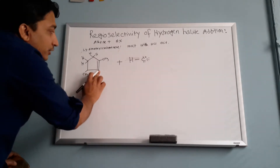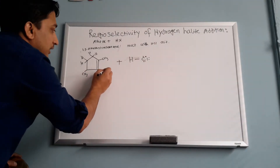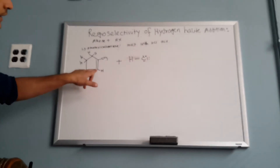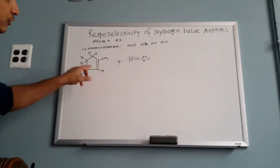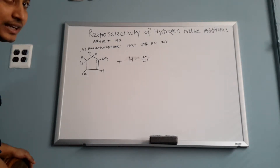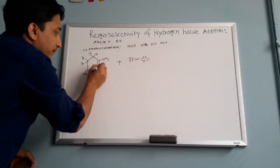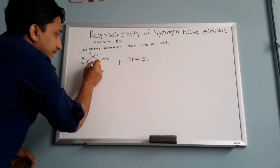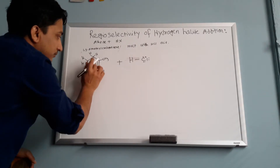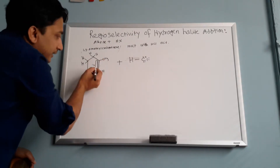This carbon at position three needs one hydrogen to fill up its four bonds. Now show me the mechanism. Always remember: in alkene cases, the pi bond attacks first. In the double bond, this is the sigma bond and this is the pi bond — and this pi bond is going to be attacked.